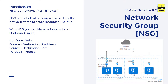Azure NSG, that is Network Security Group, is a network filter. We can call it a portion of a firewall, because a firewall does more than what a network filter does. NSG is a list of rules to say yes or no to network traffic to Azure resources like virtual machines. With NSG you can manage incoming and outgoing traffic using source and destination IP address, source and destination port, or TCP or UDP protocols.